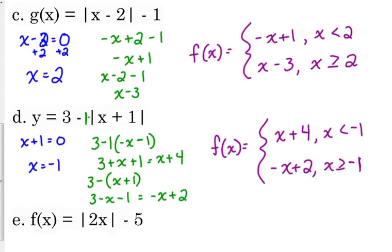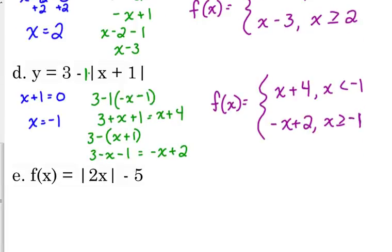For one more example, f of x equals the absolute value of 2x minus 5. Set 2x minus 5 equal to 0. Be careful here — instead of adding or subtracting, we need to divide by 2 to solve for x, so the function changes at x equals 5 over 2.